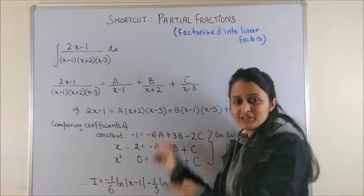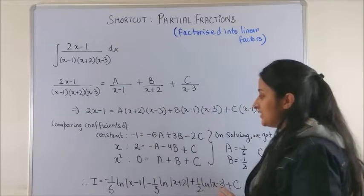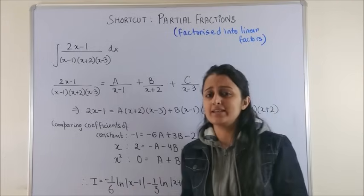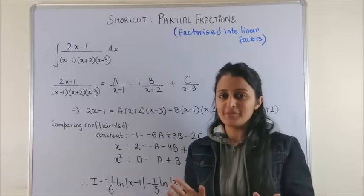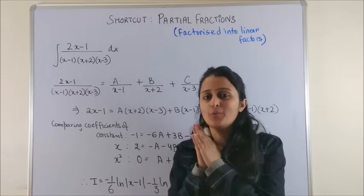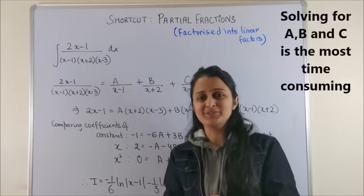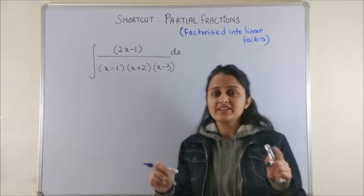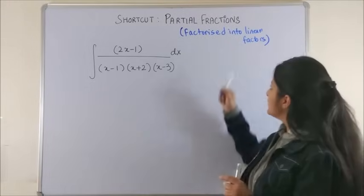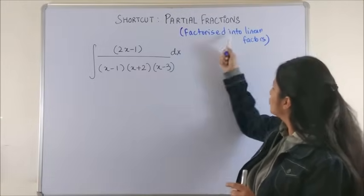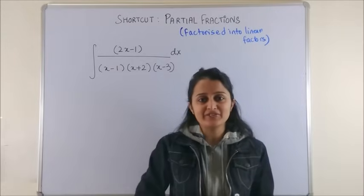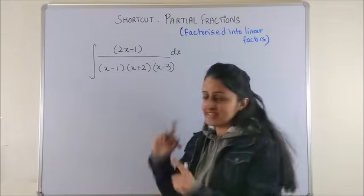First, look at the traditional method and how we go about the entire question. This mostly takes about three to four minutes on average. Once you've gone through this, I'll reveal the shortcut method to you. Please note, this method could be applied only if your denominator could be factorized into linear factors.